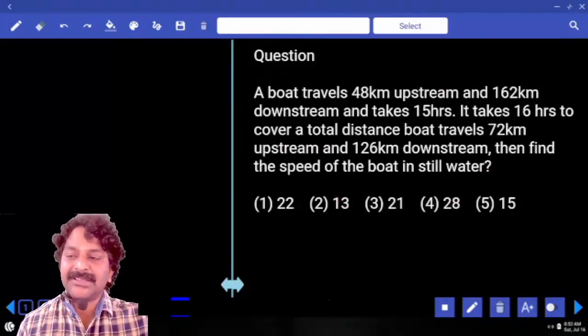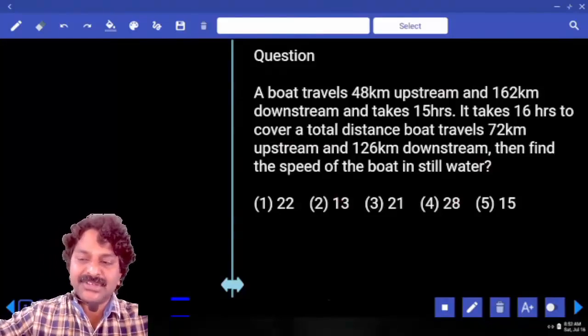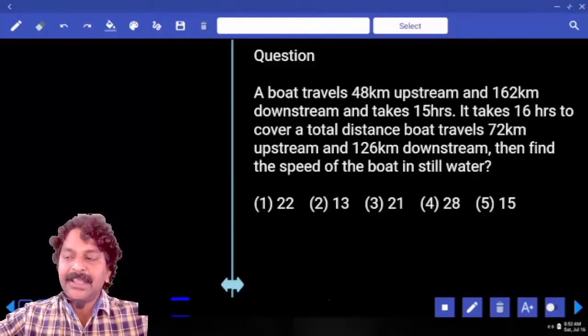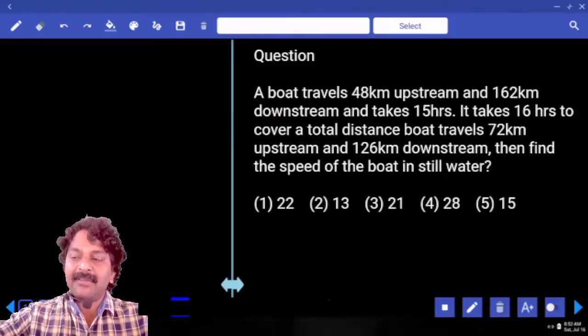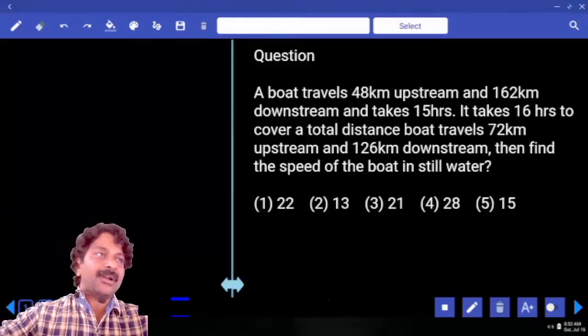A boat travels 48 kilometers upstream, 162 kilometers downstream and takes 15 hours. It takes 16 hours to cover a total distance. Boat travels 72 kilometers upstream, 126 kilometers downstream. Then find the speed of the boat in still water.